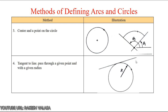The next method is center and point on the circle. We need to put the center point and one point on the circle — you can place the mouse on that point — to draw the circle. We can also draw arcs using center point and a point on the arc in any software.